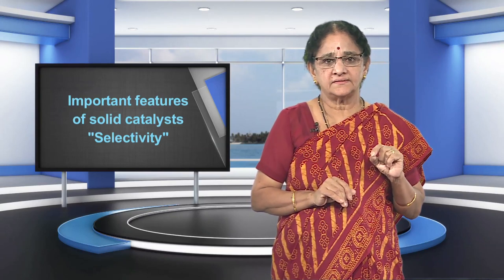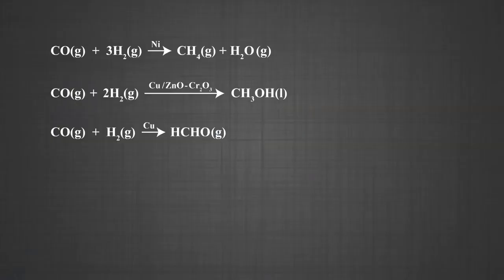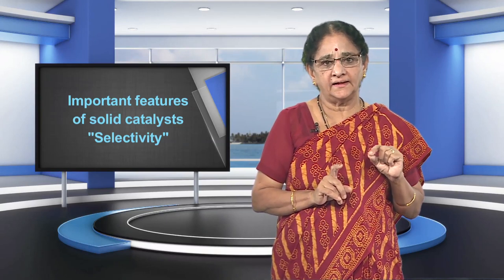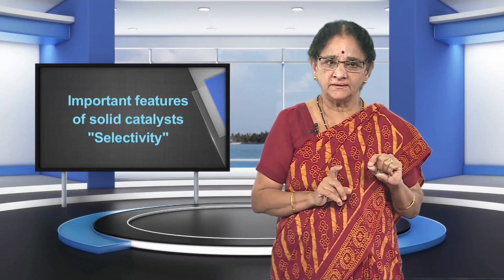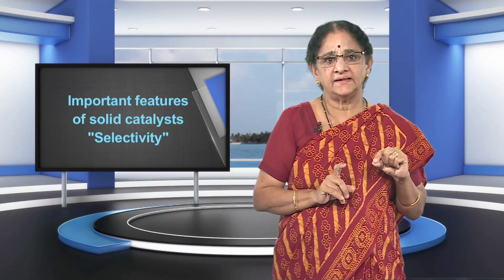The selectivity of a catalyst is its ability to direct a reaction to yield a particular product. For example, starting with hydrogen and carbon monoxide and using different catalysts, we get different products. The same reaction yields methane when nickel is used as the catalyst, methanol if copper zinc oxide is used, and formaldehyde when copper is used as the catalyst. Similarly, ethane is obtained on hydrogenation of ethyne in presence of platinum as catalyst, but when palladium and barium sulphate poisoned with quinoline is used, ethene is obtained as the product.